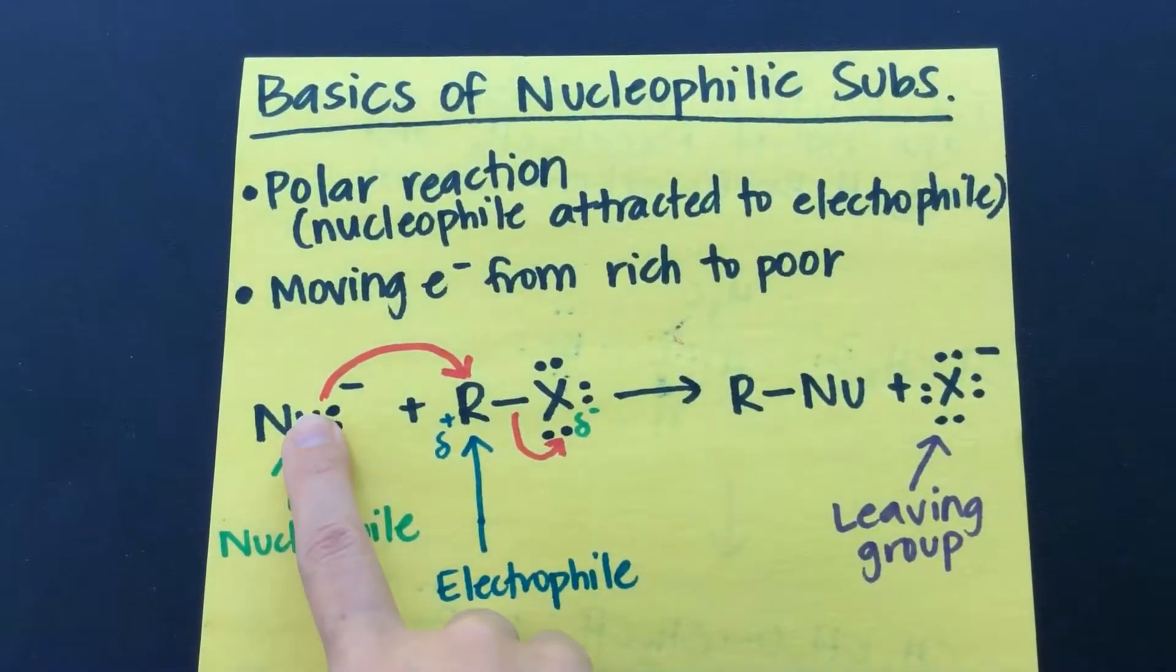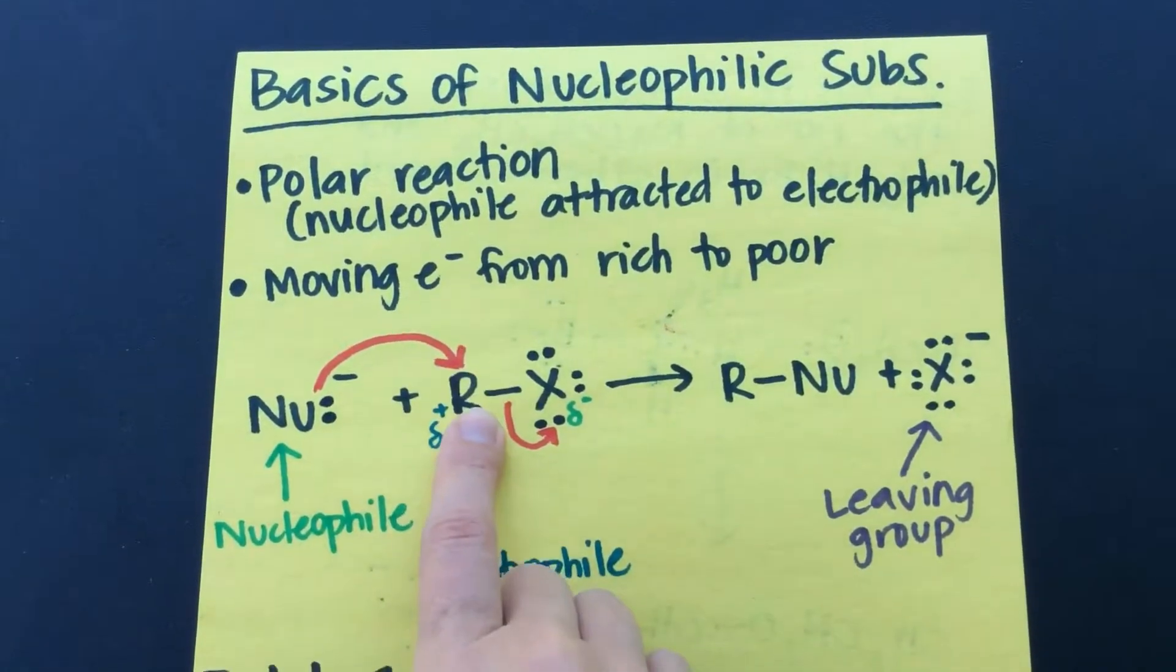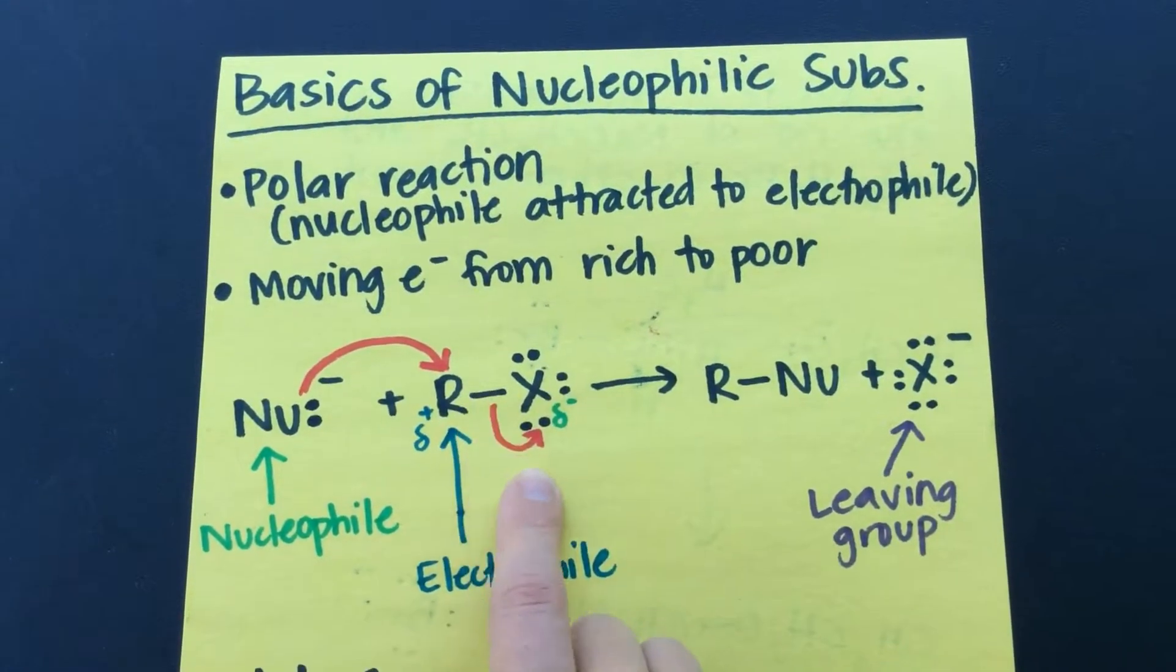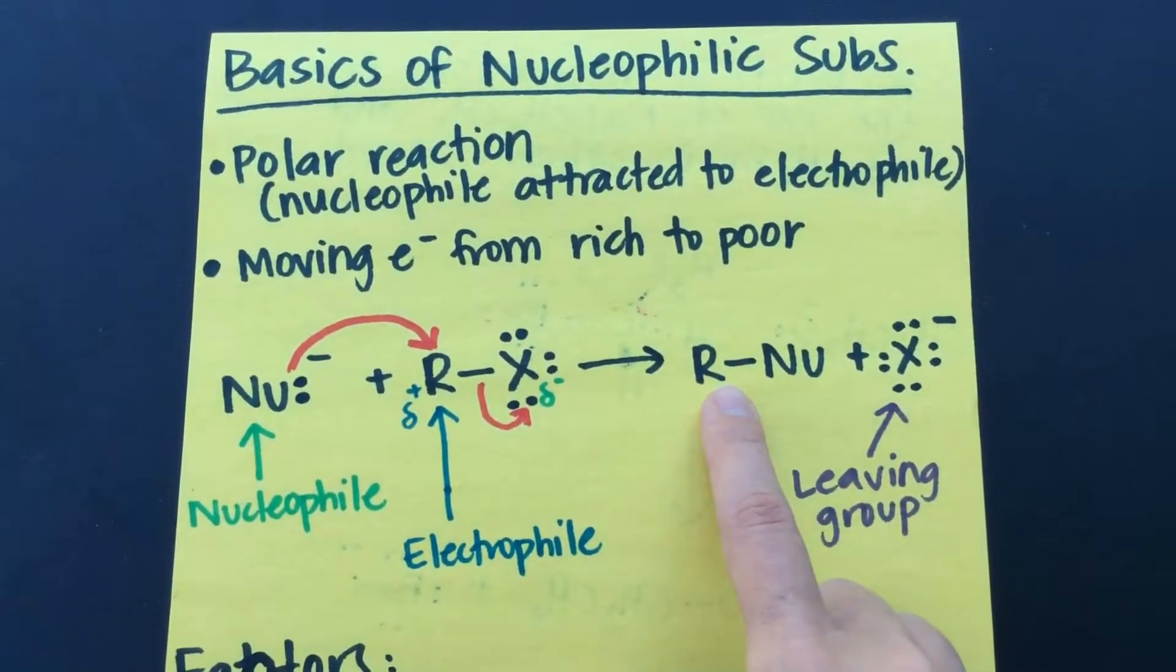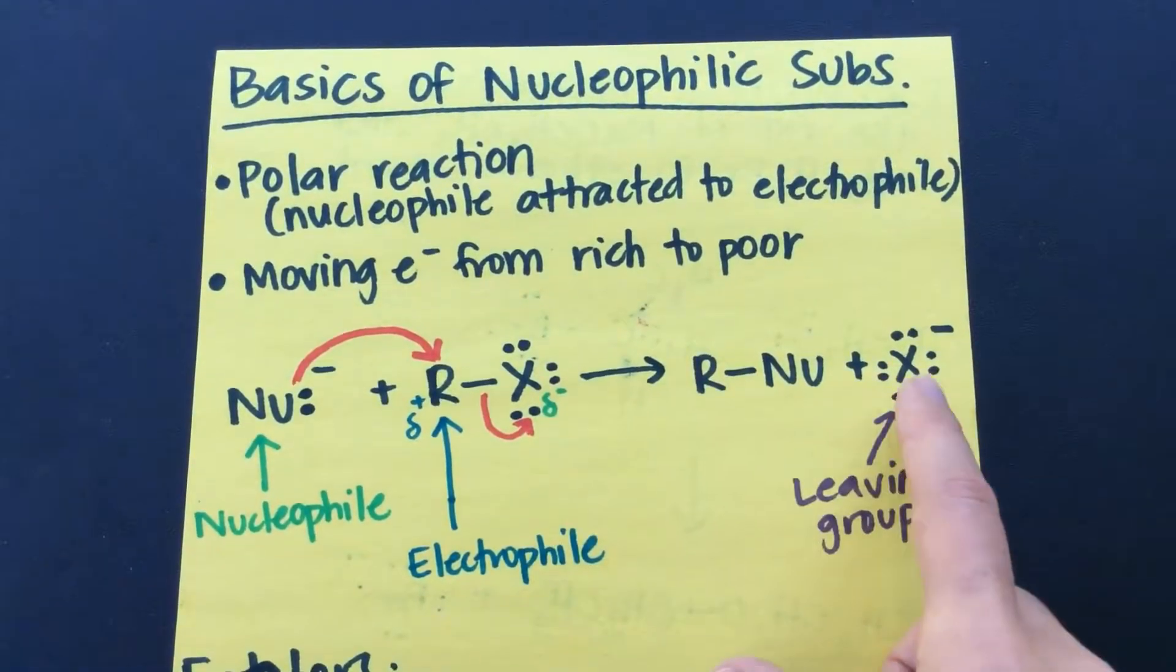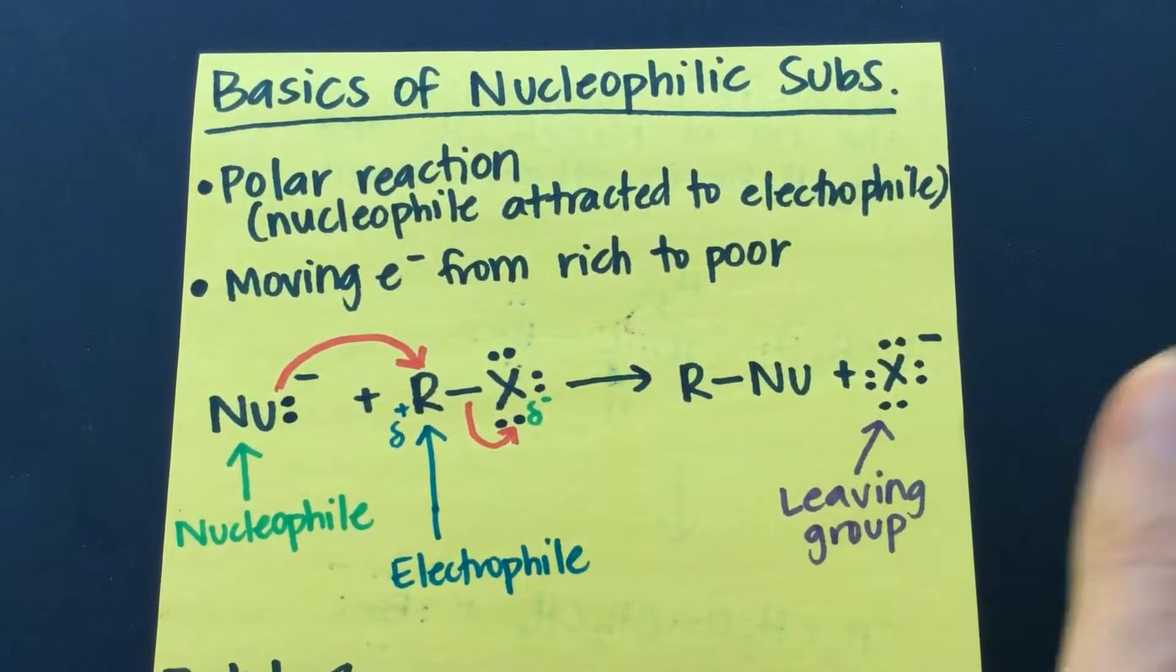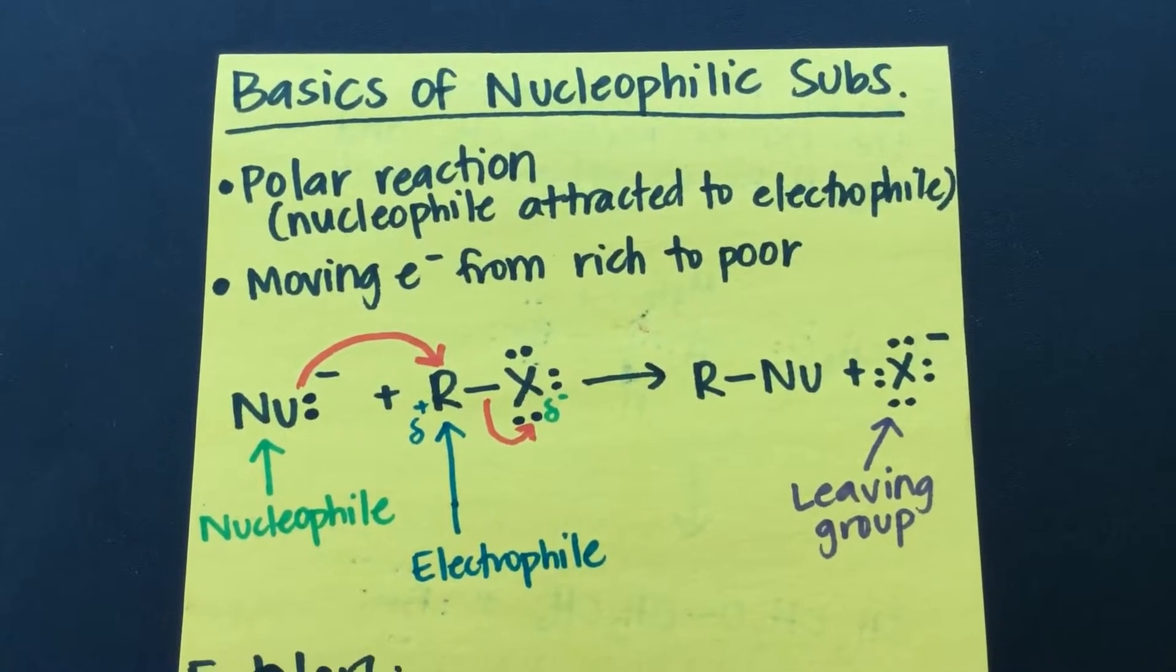So our nucleophile attacks electron rich to electron poor. And then these electrons here get transferred here. So we're left with a bond between whatever that R was and our nucleophile. And then we've got a leaving group. So this is one of the most basic nucleophilic substitutions that you can see.